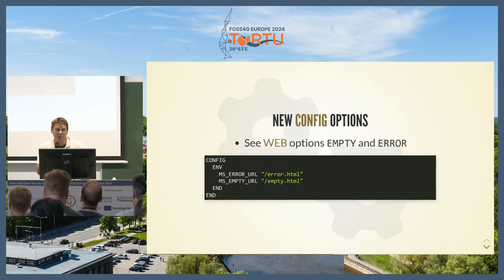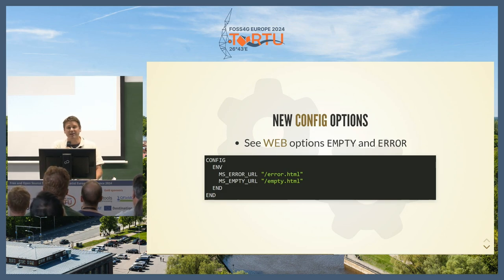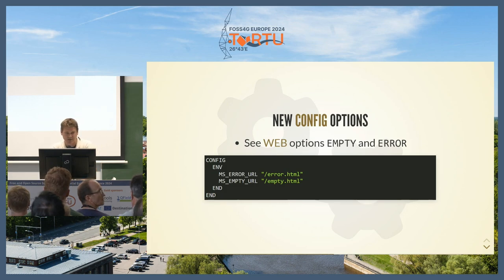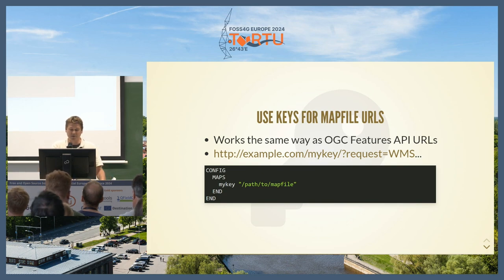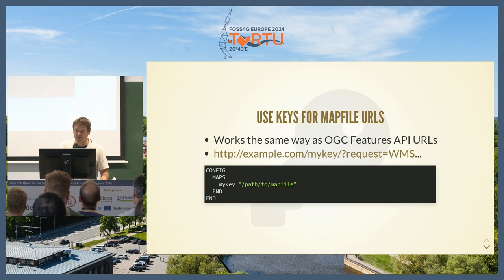There are two new config options. In MapServer 8 there's a new global config file where you can put various settings. Instead of seeing the default MapServer error message when you connect, you can change it to custom HTML, and if there are errors in the data you can also point that to an HTML template. You can also set up keys and aliases in the config file, so instead of having a path to your map file in the query string — which isn't particularly secure — you can put an alias in the config file and point it to a map file. This works not just for OGC Features API but for WMS as well, so you can just put the key name into the URL path without referring to the map file in the query string.